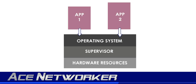In a normal operating system like Windows, you have a portion of the programming in the operating system that handles all the low-level interactions between software and the hardware components. This portion in a normal operating system is known as the supervisor. The supervisor handles things like allotting time and resources and task scheduling, etc.